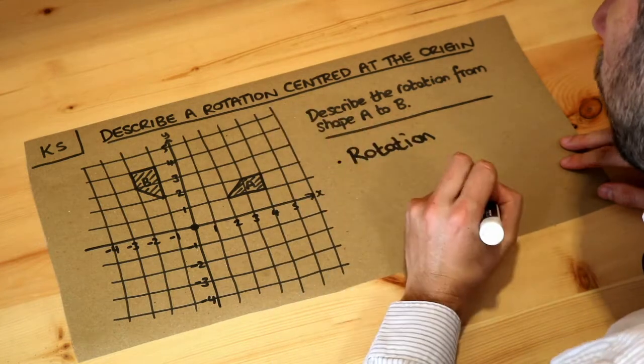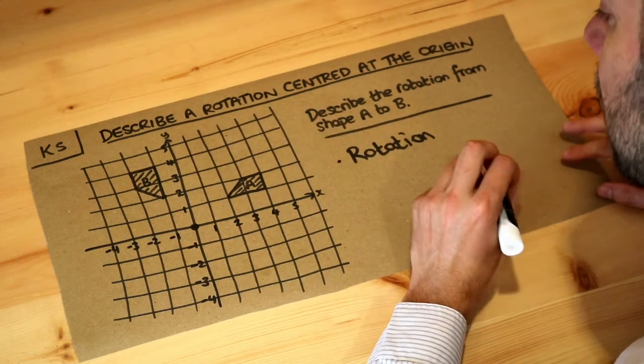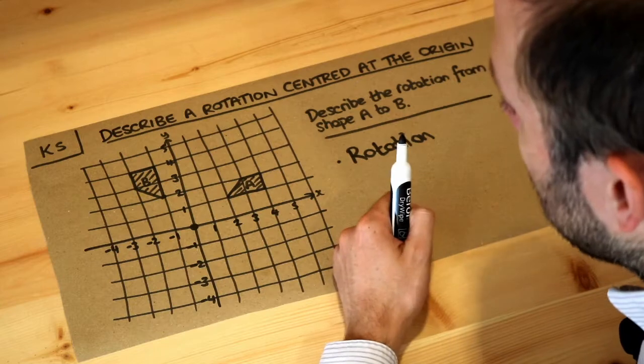We also need to say what the center of rotation is. The center of rotation is where the shape is spinning about.